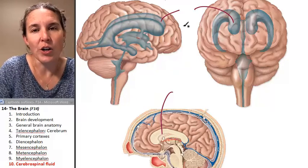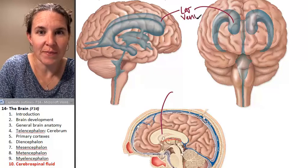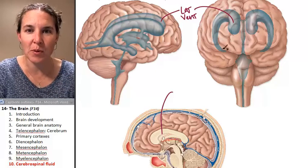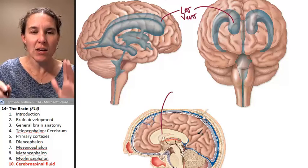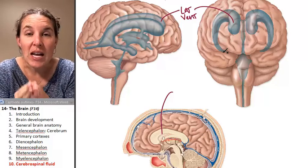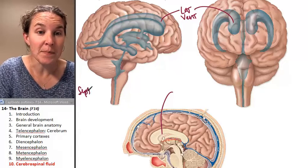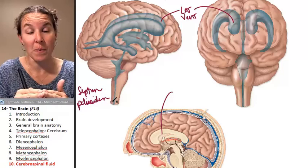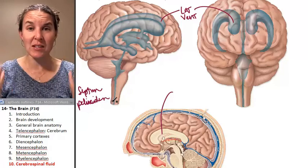First of all are your lateral ventricles. How many do you have? There are two. They look like sheep horns — like ram horns. They are separated in your brain by a structure called the septum pellucidum. The septum pellucidum separates your lateral ventricles, and they really do curve up into your cerebrum.